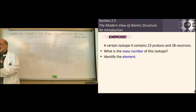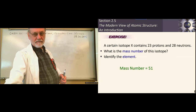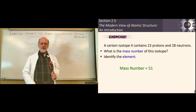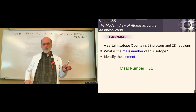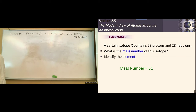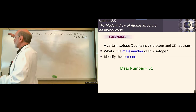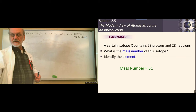Here's an example: if you have an isotope containing 23 protons and 28 neutrons, the mass number is 51 — you just add them together. What element is that? Look on the periodic table — 23 protons is vanadium. So the element is vanadium.